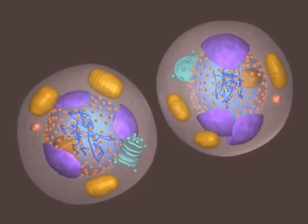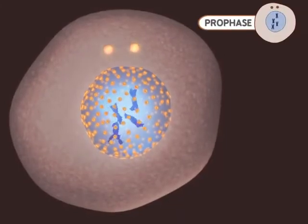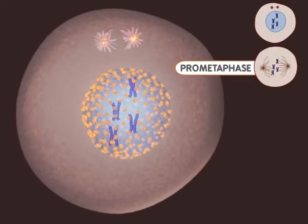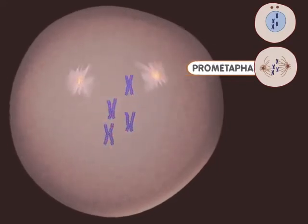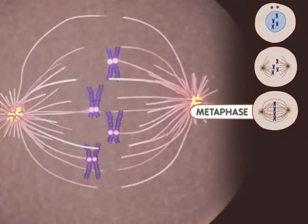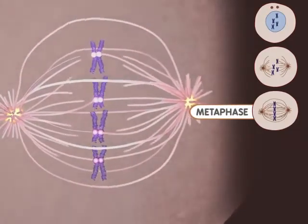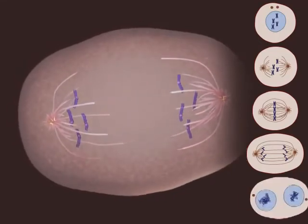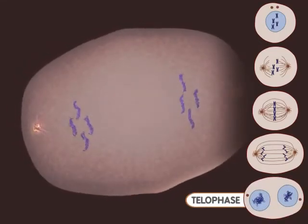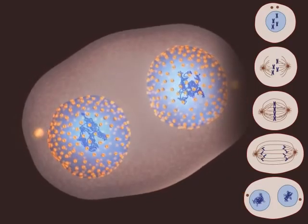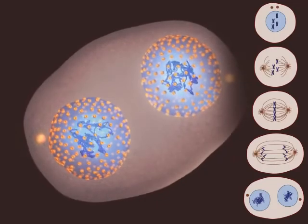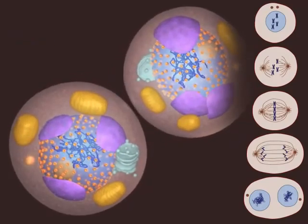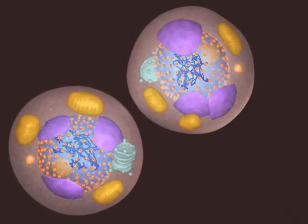Let's watch the process one more time. Mitosis begins with prophase — notice the DNA condensing into chromosomes during this stage. Microtubules appear during prometaphase, and the nuclear membrane breaks down. Metaphase occurs when the chromosomes are aligned at the center of the cell. During anaphase, the chromosomes are moving apart. The telophase stage is marked by the appearance of new nuclear membranes. This is the end of mitosis. Finally, the splitting of the cell occurs during cytokinesis. The two new cells are now ready to grow and perform their specialized functions.